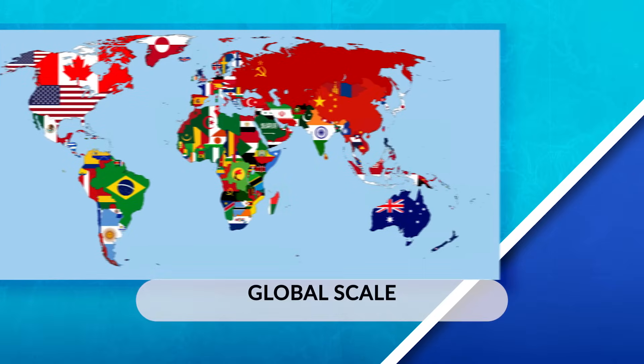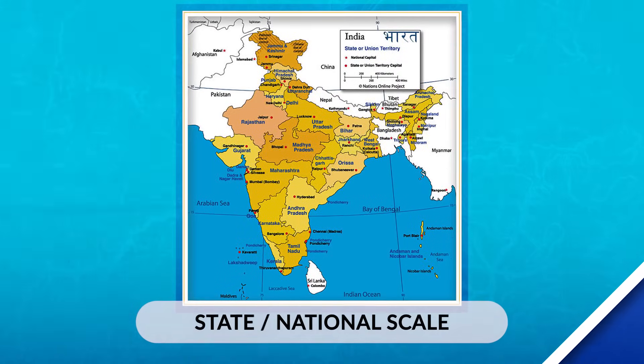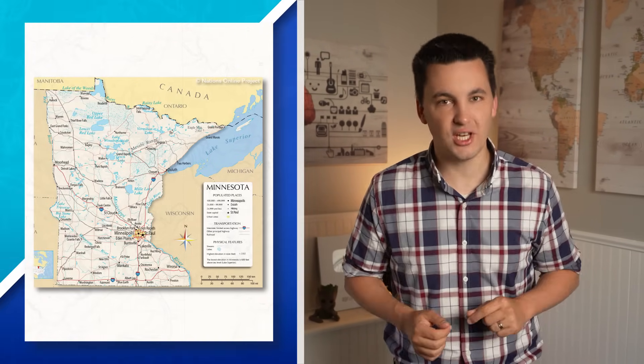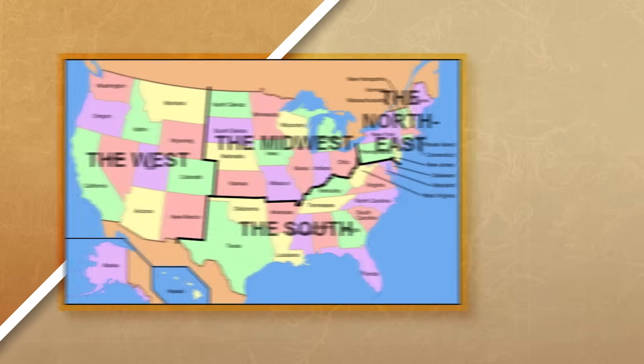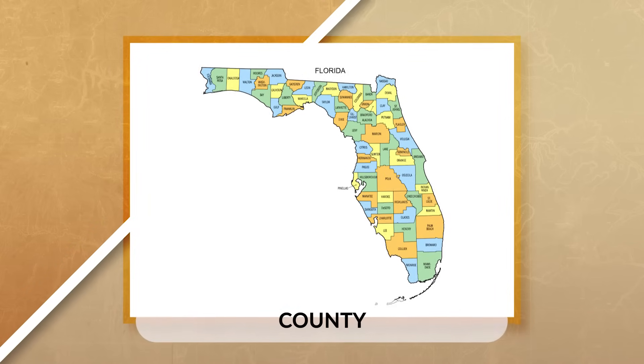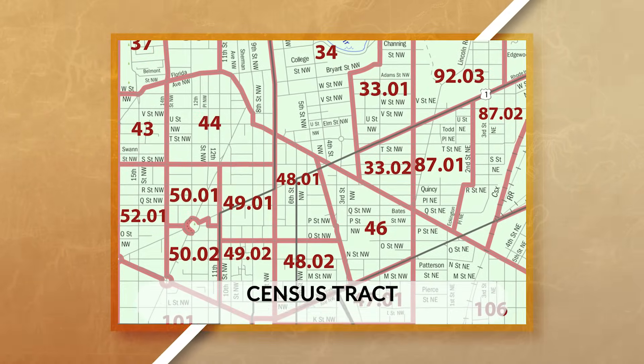There is a global scale which shows the entire Earth's surface, a state scale or national scale which focuses around a country's borders, and a sub-national or sub-state scale which looks at organizations below the national level. For example, in the United States we could look at one of the 50 states, or a specific region. We can also break scale down further to the county level, an individual city or settlement, or one of the smallest classifications — a census tract.